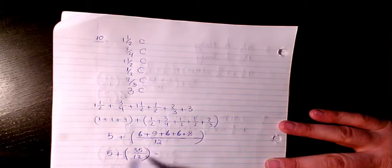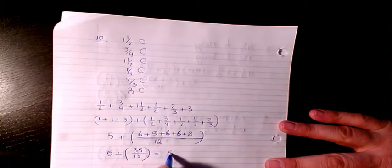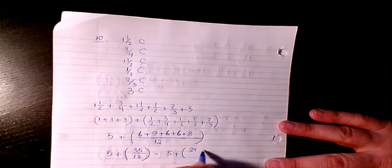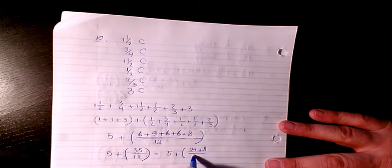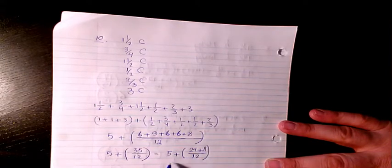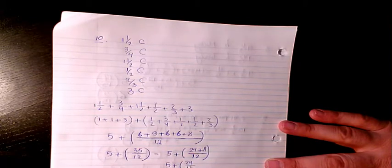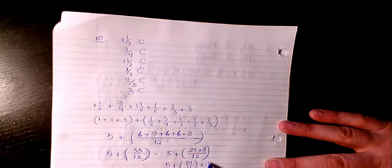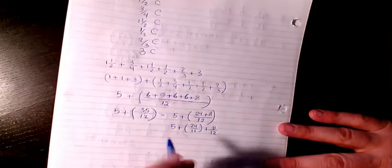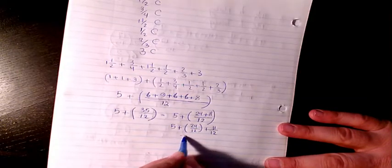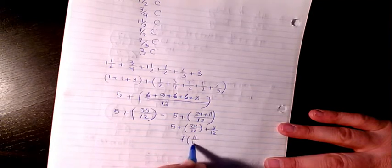So thirty-five is twenty-four plus eleven divided by twelve, so I will have five plus twenty-four over twelve plus eleven over twelve. So seven and eleven over twelve.